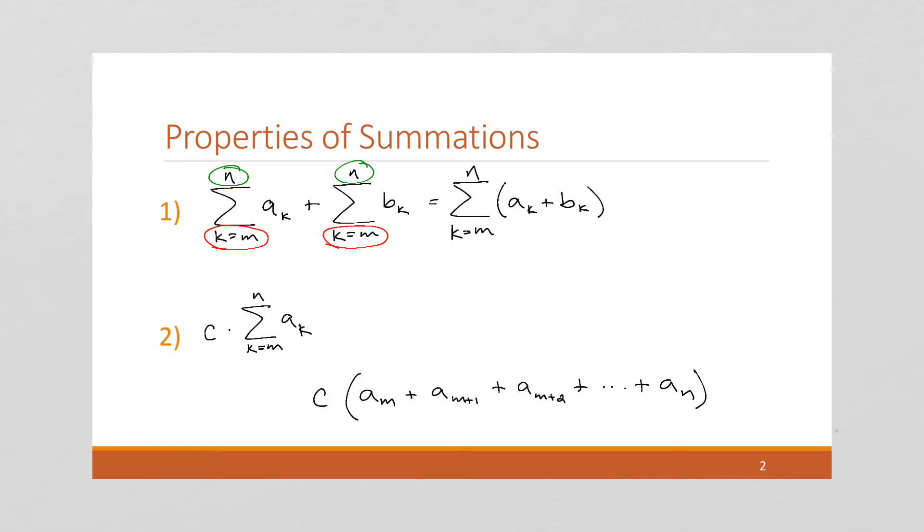Well, we know from algebra, if we have a setup like this, we can distribute that c. So this would equal c times a of m plus c times a of m plus 1 plus c times a of m plus 2, all the way up to c times a of n. We've distributed the c.